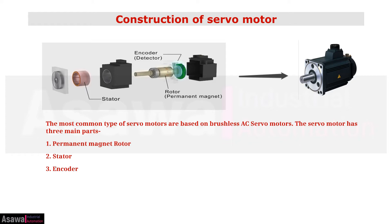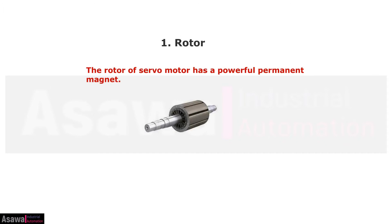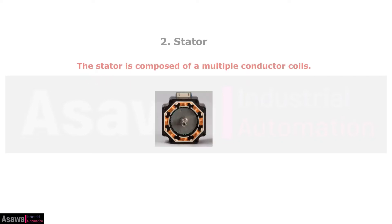Now we will learn about the construction of a servo motor. The most common type of servo motors are based on brushless AC servo motors. The servo motor has three main parts: permanent magnet rotor, stator, and encoder.